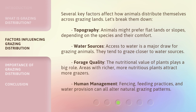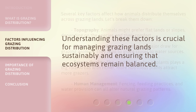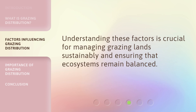Several key factors affect how animals distribute themselves across grazing lands. Topography: animals might prefer flat lands or slopes, depending on the species and their comfort. Water sources: access to water is a major draw for grazing animals — they tend to graze closer to water sources. Forage quality: the nutritional value of plants plays a big role; areas with richer, more nutritious plants attract more grazers. Human management: fencing, feeding practices, and water provision can all alter natural grazing patterns. Understanding these factors is crucial for managing grazing lands sustainably and ensuring that ecosystems remain balanced.